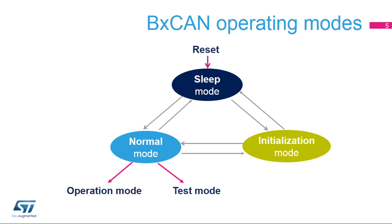This means 11 consecutive recessive bits have been monitored on pin CAN-RX. When the CAN is in normal mode, the user can select whether to run in operation or test mode.